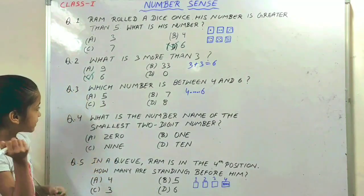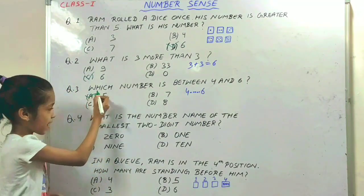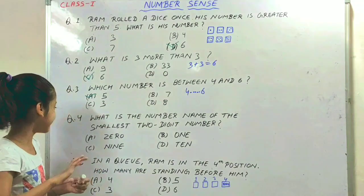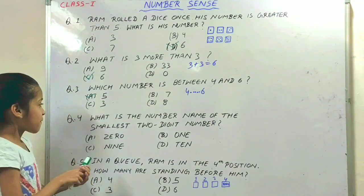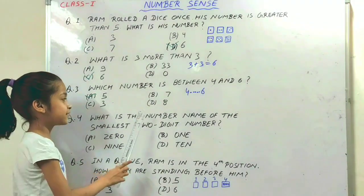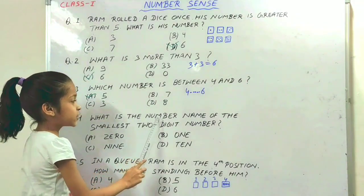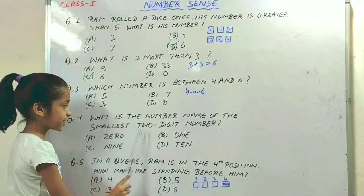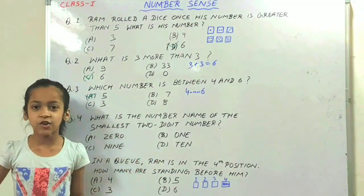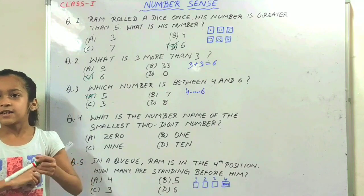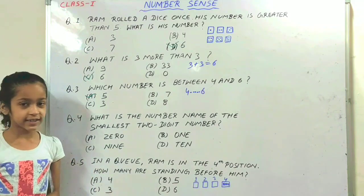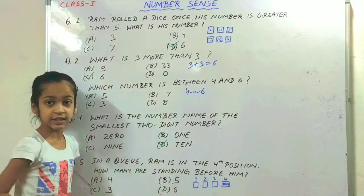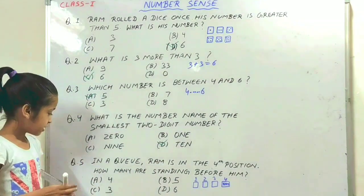The answer is A, 5. The next question is: what is the number name of the smallest 2-digit number? The smallest 2-digit number is 10. So option B is the correct option.